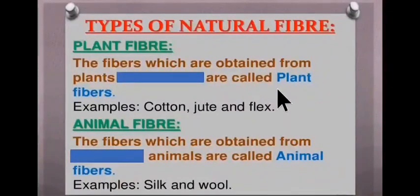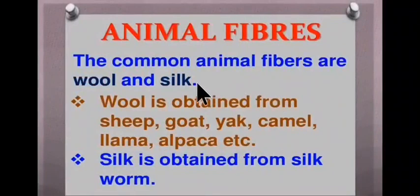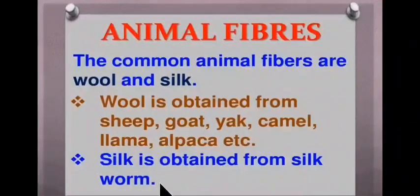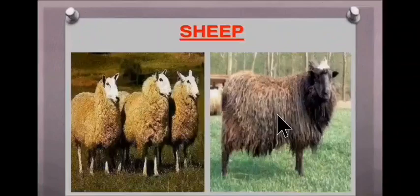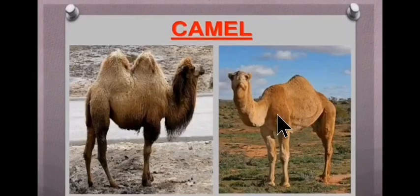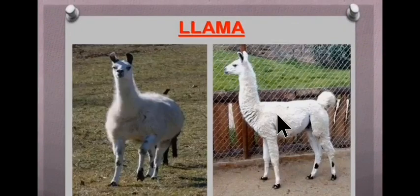In this chapter, we are mainly going to study about two fibers: wool and silk. Wool is obtained from sheep, goat, yak, camel, llama and alpaca. Silk is obtained from silk worm. These are some pictures of the animals from which we get wool — sheep, goat, yak, camel, llama and alpaca.